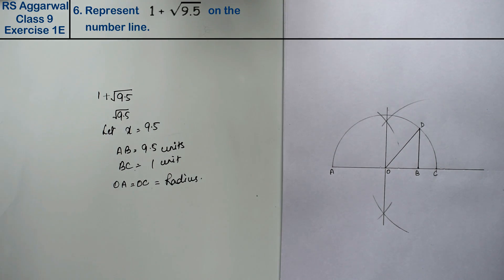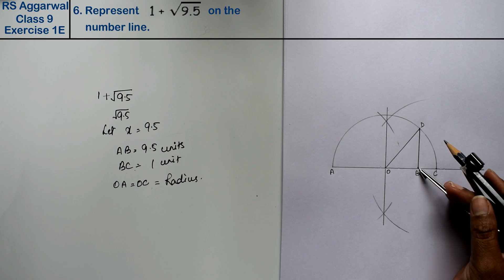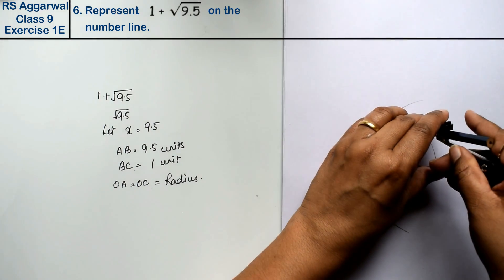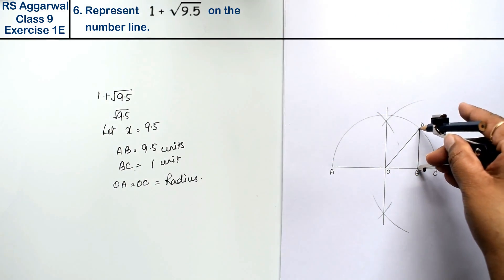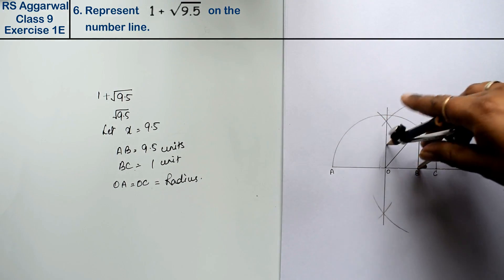Now we will take BD as a radius and we will draw a semicircle here.